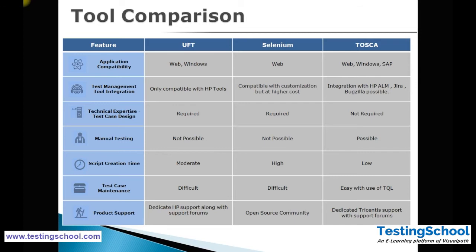For designing test cases, technical expertise is required in both UFT and Selenium, whereas no technical expertise is required for Tosca. Manual testing is not possible in UFT or Selenium, whereas in Tosca you can do manual testing. Script creation time is moderate for UFT and very high for Selenium, but low for Tosca. Maintenance of test cases is difficult in UFT and Selenium, but very easy in Tosca using TQL — Tosca Query Language.